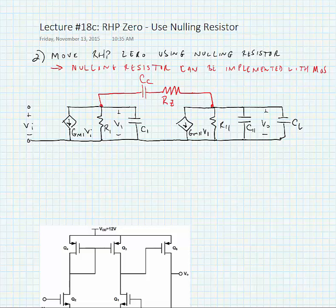If we were to do KCL at the input and output nodes and define a transfer function Vout over Vin, we could figure out what the pole frequencies and zero frequencies are.